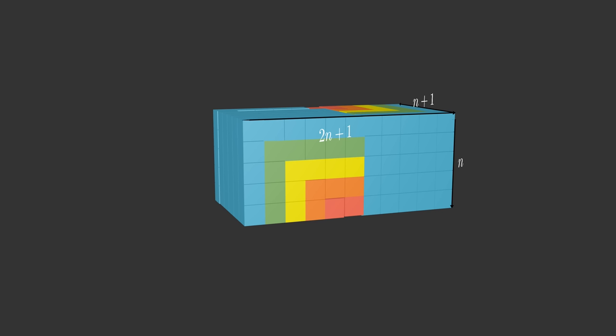Therefore, the sum equals n times n plus 1 times 2n plus 1 divided by 6.